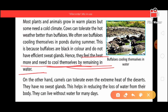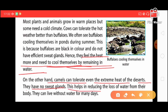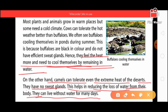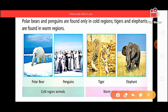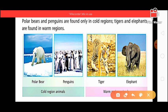On the other hand, the camel can tolerate even the extreme heat of the desert. Camels lack sweat glands, which helps reduce the loss of water from their body, allowing them to survive without water for many days. In cold regions, animals like polar bears and penguins thrive, while in warm regions, animals like tigers and elephants are found.